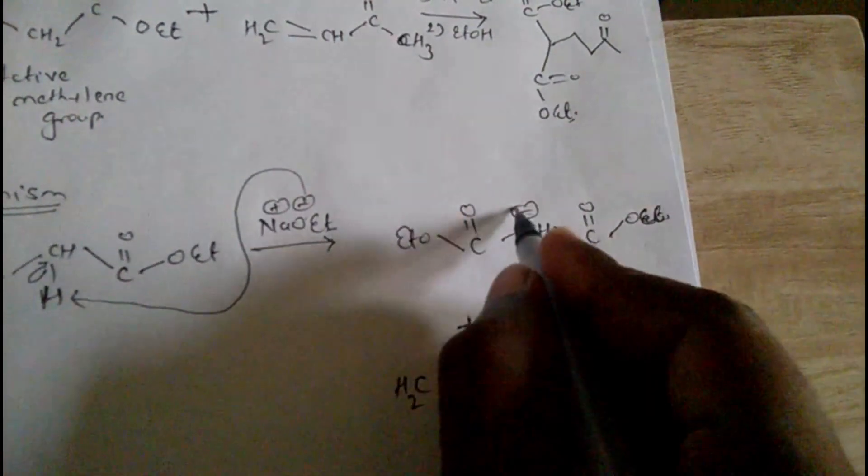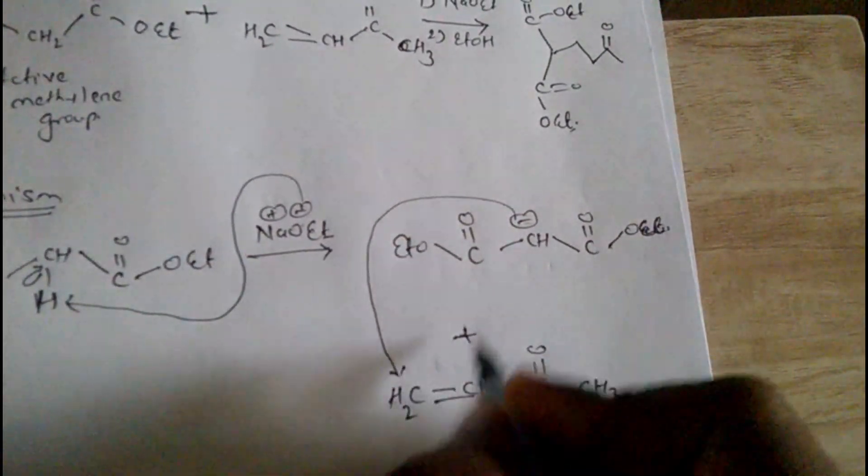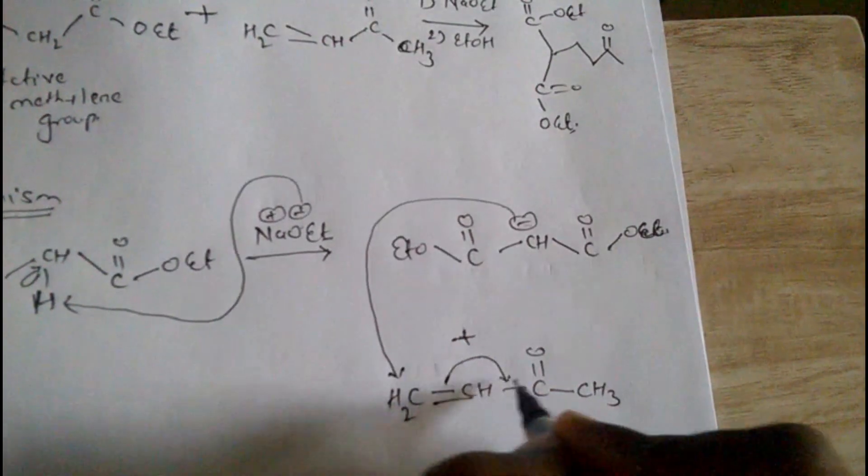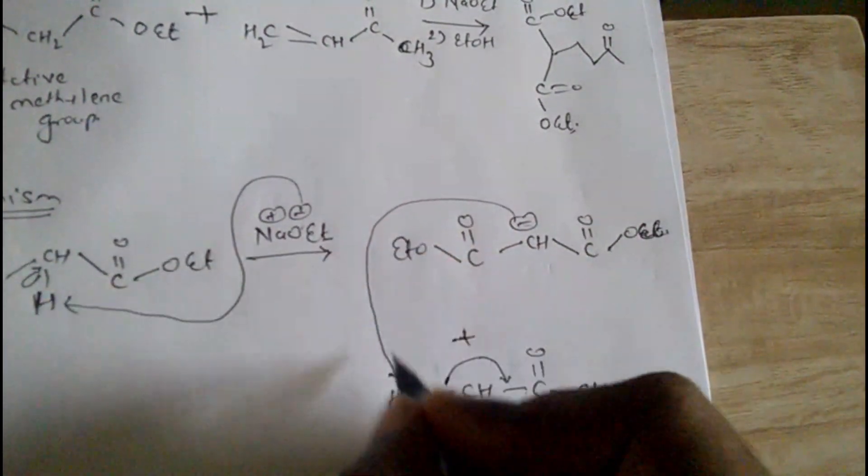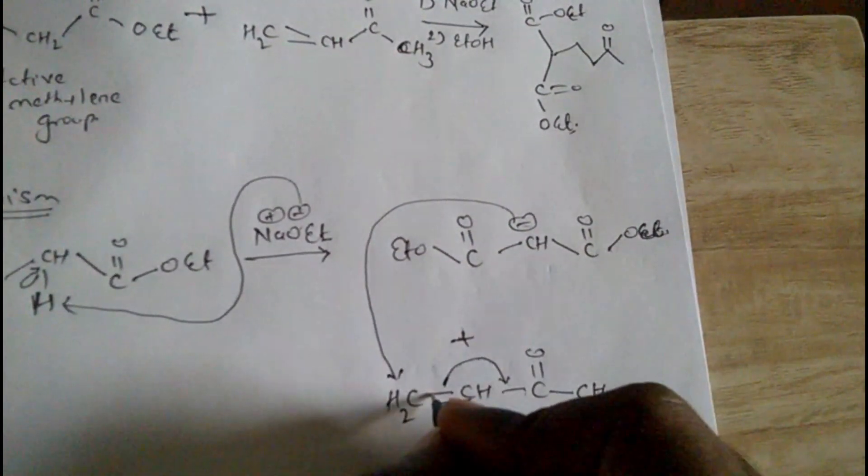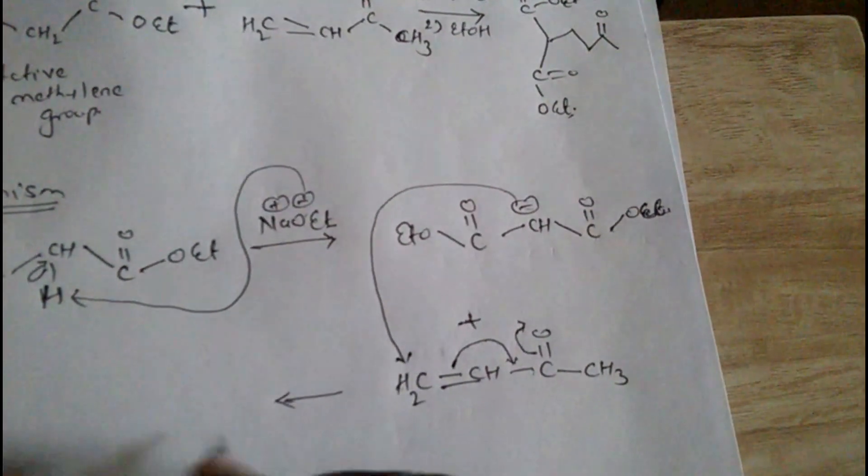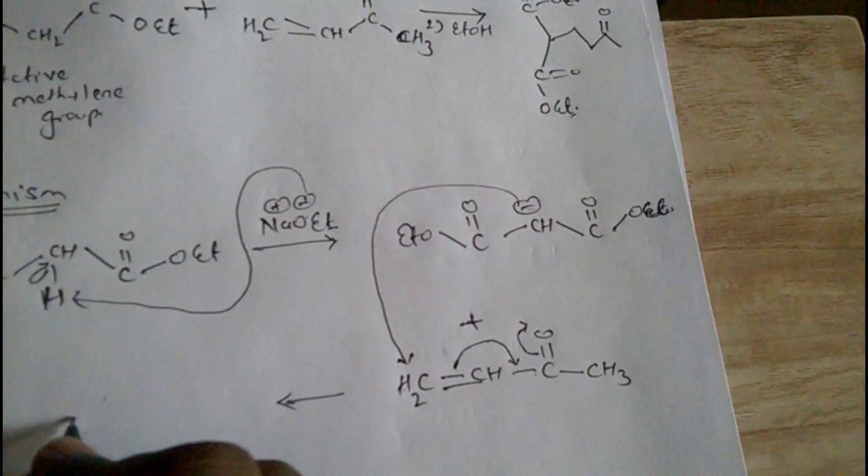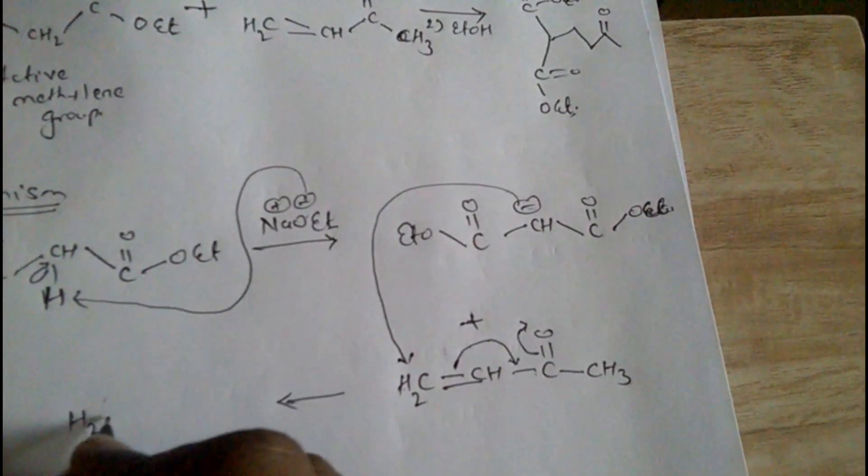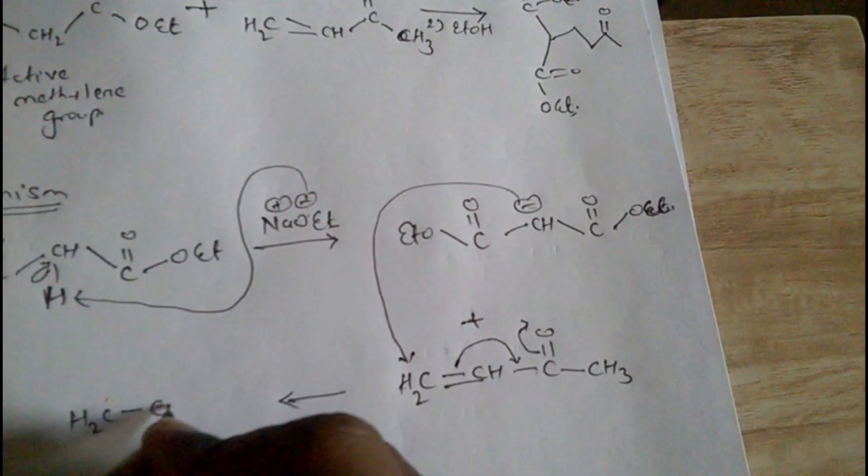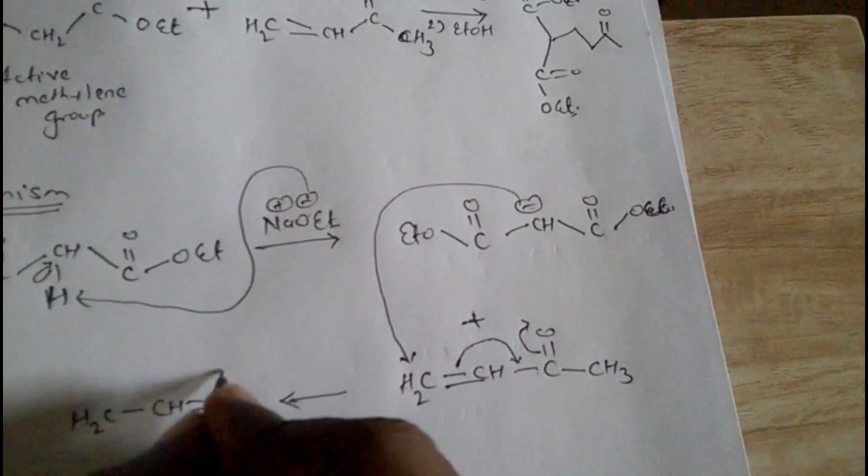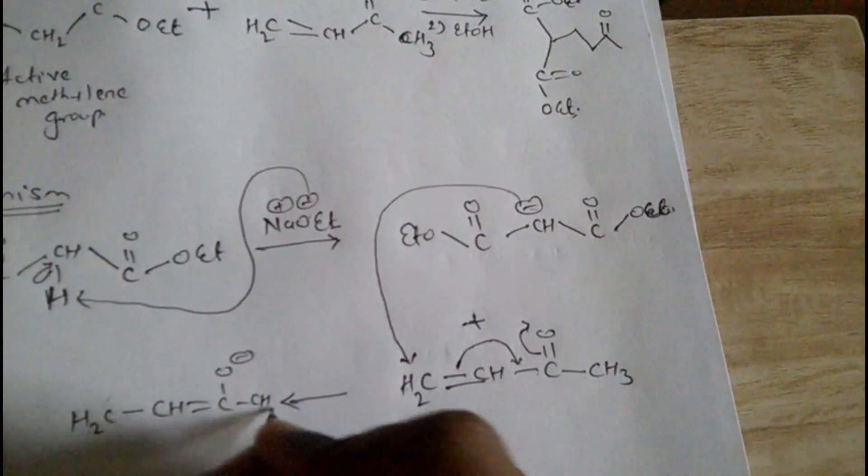Then it will react to the alpha-beta unsaturated carbonyl compound. The negative charge will attack this carbon. This bond will shift here, the double bond will shift here, and this bond will shift here. O will get a negative charge and we get H₂C-CH=C-O⁻ and CH₃.